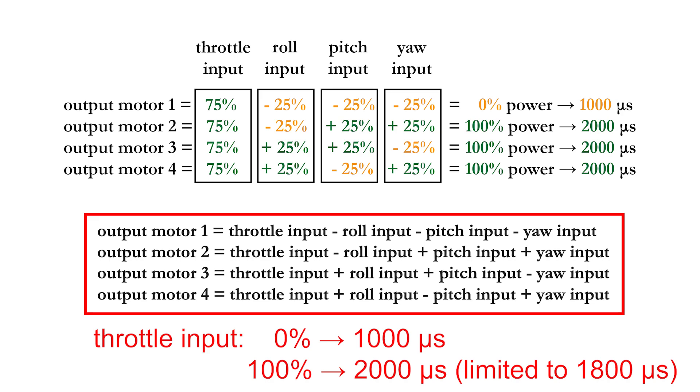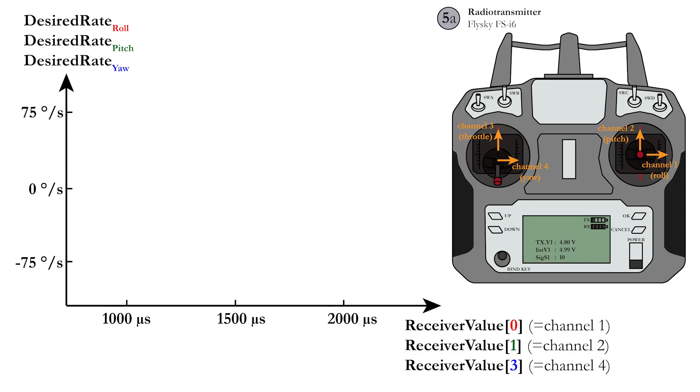For the roll, pitch, and yaw inputs, the story is a little bit more complicated. The receiver sends commands to the microcontroller that vary between 1000 and 2000 microseconds according to the position of the radio transmitter stick.